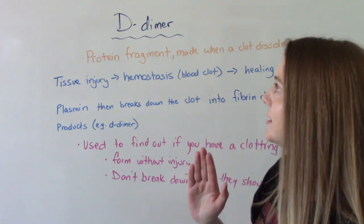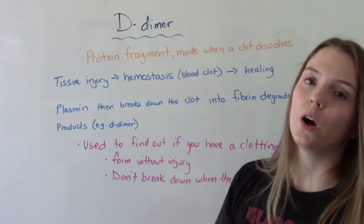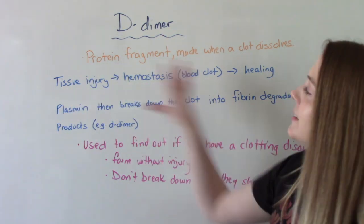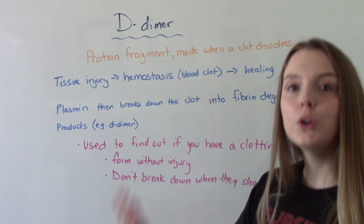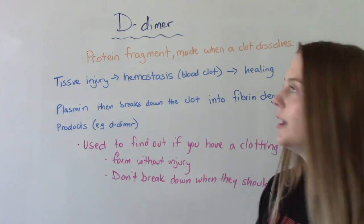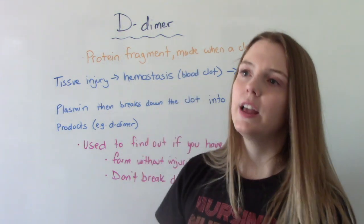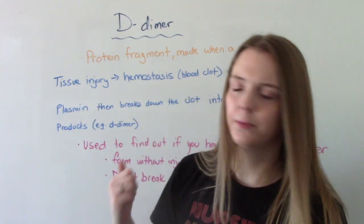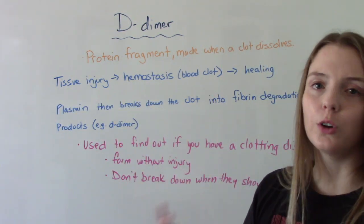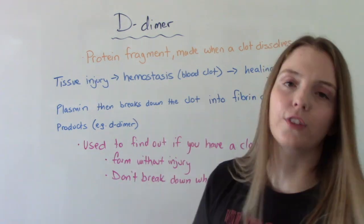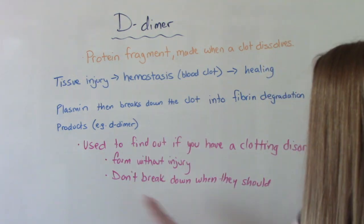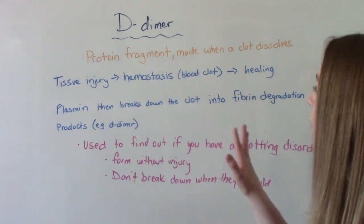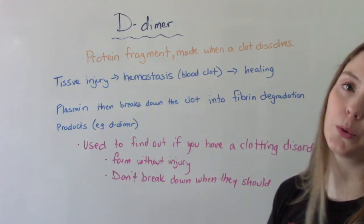So this test is used to find out if people are having issues with clotting. In the normal scenario, it's normal — we expect this to happen. But this test is used to figure out if people are having blood clotting issues without an injury. So it's being formed without an injury, or the clots are not breaking down when they're supposed to. That's the point of this test — to see if you have a clotting disorder.